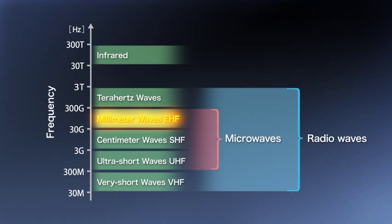Millimeter waves occupy the electromagnetic spectrum from 30 to 300 gigahertz. They are used for line-of-sight communication since they travel in a straight line.